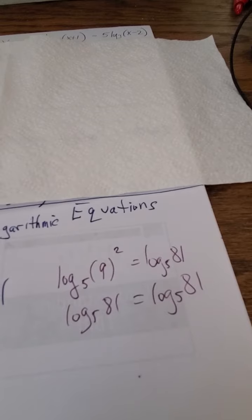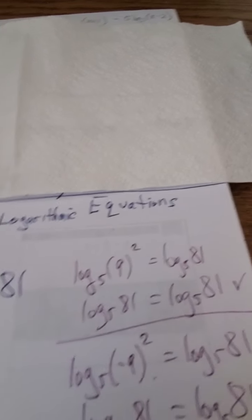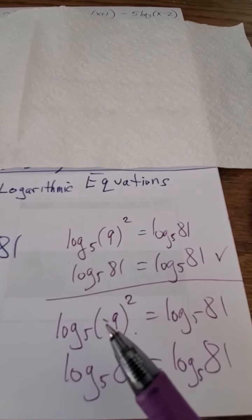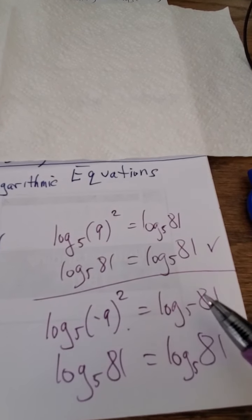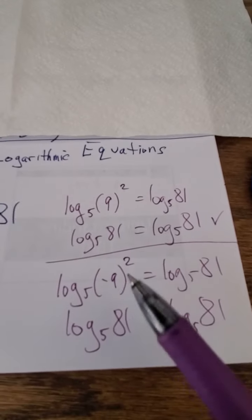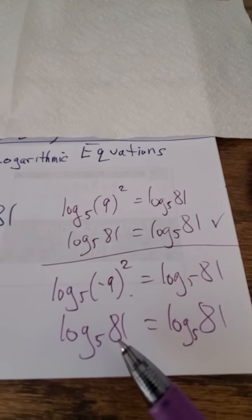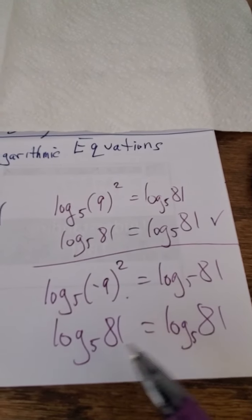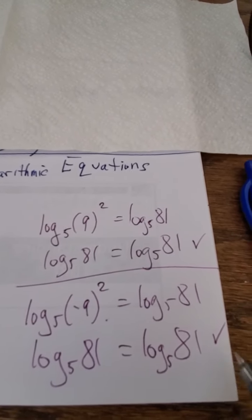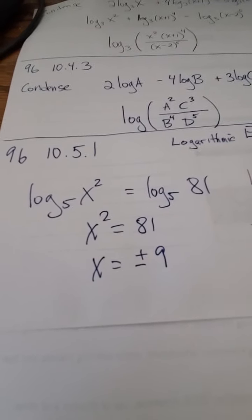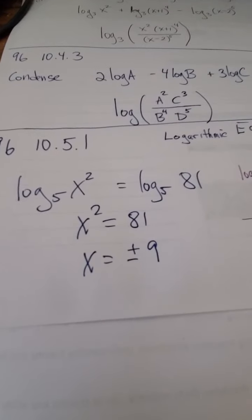And if I put in x equals negative 9, I get the log base 5 of negative 9 squared is the log base 5 of 81, but negative 9 squared is positive 81, so I get log 5 of positive 81 equals log 5 of positive 81. Check! See how that check just magically appeared? Awesome!